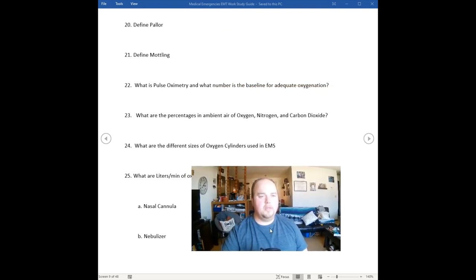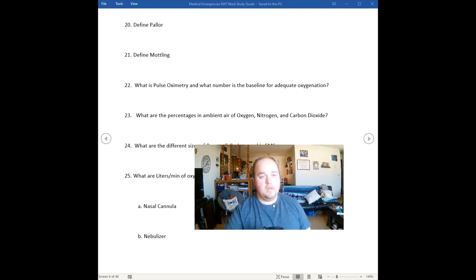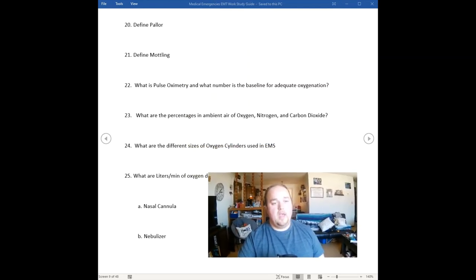A pulse oximeter is the measurement tool we use to measure the amount of oxygen saturation that is on the blood. Pulse oximetry, it would be the how we go about it. Pulse oximetry is when we put it on their finger and we say, this is the number that we have for how they're breathing. What number is our baseline for adequate oxygenation is 94%.